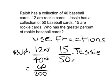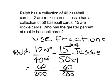Jesse's, again we're going to have that common denominator, we'll multiply by 4. 15 times 4 is 60, 50 times 4 is 200, so they end up being the same. In this case then, we can say that 12 fortieths is equal to 15 fiftieths, so they actually have the same percentage of rookie baseball cards.